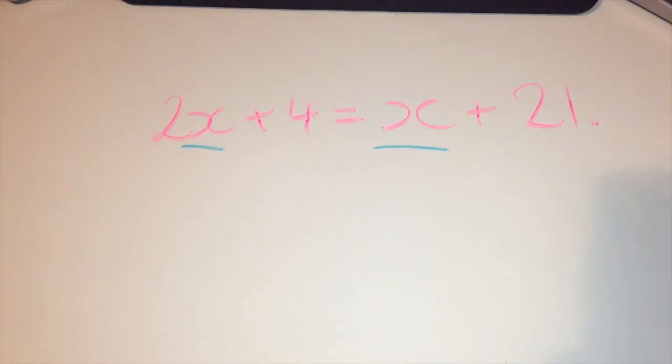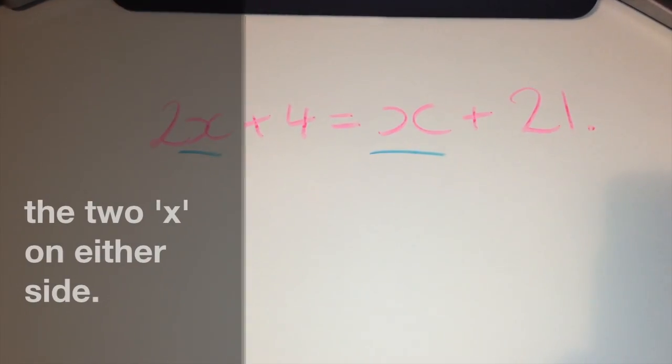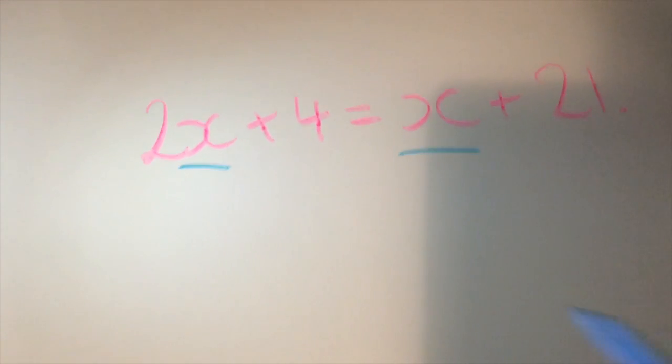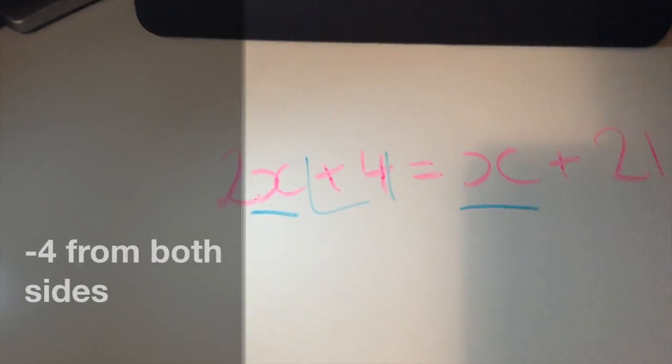Now this equation has unknowns on both sides. The first step we need to take is minusing both sides.